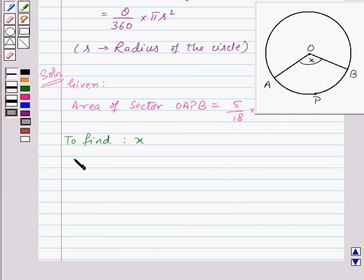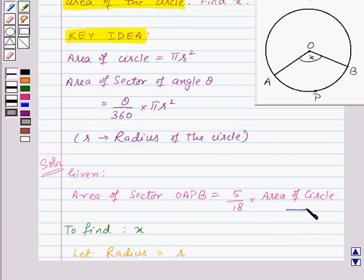First, let us assume that the radius of the given circle is R. Let us denote this as equation ①.